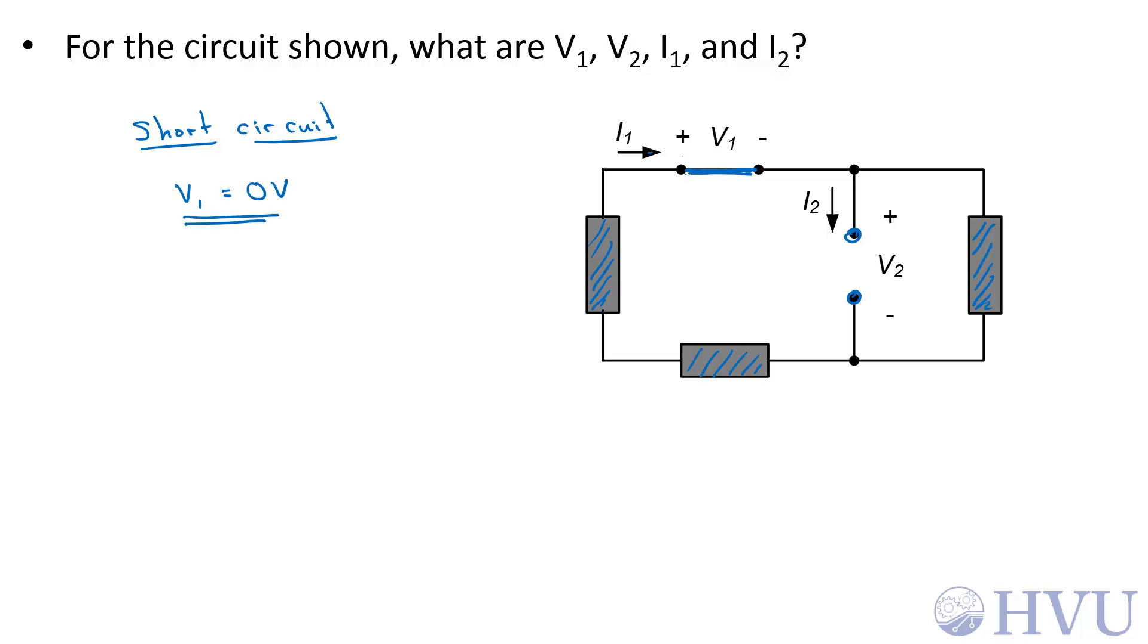That is always true. The short circuit itself, however, doesn't tell us anything about the current, so we don't know what the current is. In order to determine this current, we would have to know something about these other circuit elements. Those are the elements that will tell us what this current is.